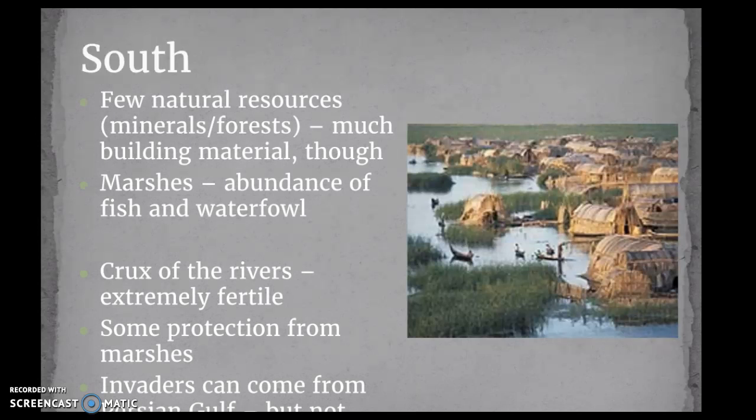In the south, there are few natural forest resources, but still a lot of building materials. Marshes are very important because you've got the Persian Gulf down there and where the Tigris and the Euphrates come together — a very fertile area. You've got a lot of fish and waterfowl, so those are great resources. Because of the extreme fertility, you actually have a lot of civilizations developing towards the south of Mesopotamia. Marshes also give you some protection from boat invasion. Invaders can still come from the Persian Gulf, but it's more difficult. Really good for fertility, resources, and you do have some protection, but also some access for invasion.